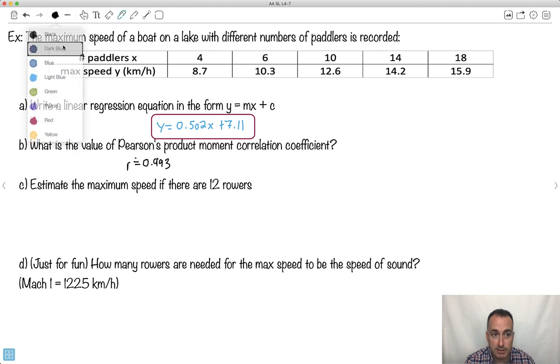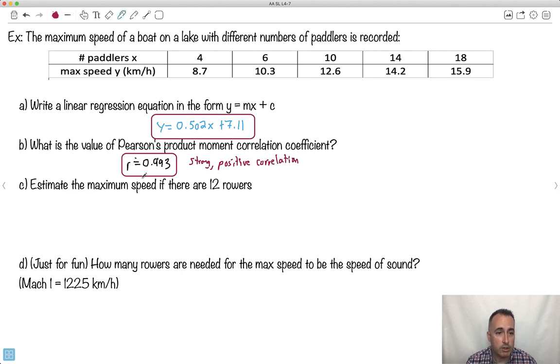So you tell me, is this a good fit? Darn right it is. It's almost 1. So what does this tell you? This is a strong positive correlation. So what does that tell you? That tells you that the more rowers you add, the faster you go. So it tells you it's a strong positive correlation.